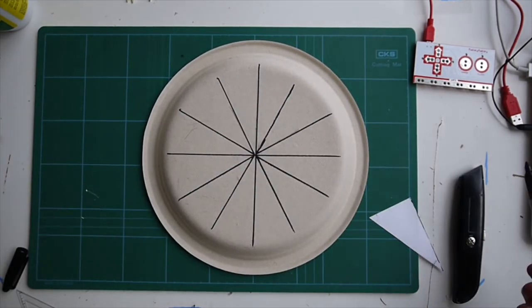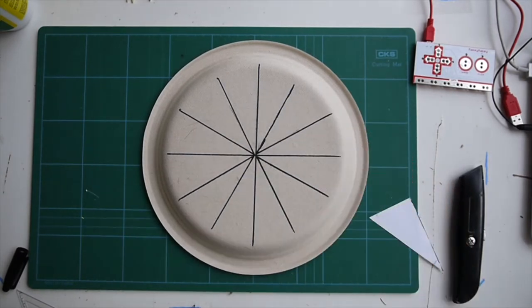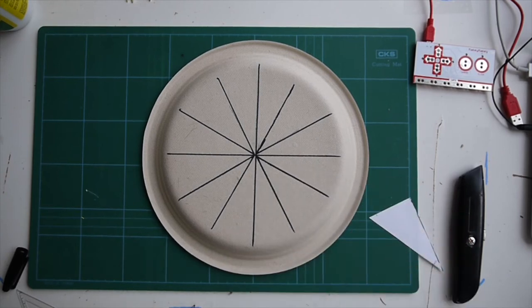There we go, I've gone and created my 12 segments, 1, 2, 3, 4, 5, 6, 7, 8, 9, 10, 11, 12. Each segment is 30 degrees and that'll be useful to know when we get into our scratch project a little later.